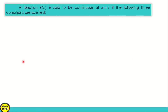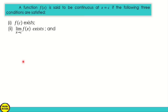A function f of x is said to be continuous at x equal to c if the following three conditions are satisfied: first, f(c) exists; second, the limit of f of x exists as x approaches c; and third, they are equal. If even one condition is not satisfied, the function is discontinuous.